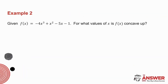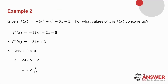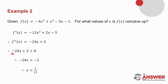In example number two, pause the video and try it before we do it together. This time I don't give you a graph; I ask for what values of x is f(x) concave up. From earlier in the video, we said when a graph is concave up, the second derivative is positive. So first I get the derivative, then I get the second derivative, and I solve for where the second derivative is greater than zero.